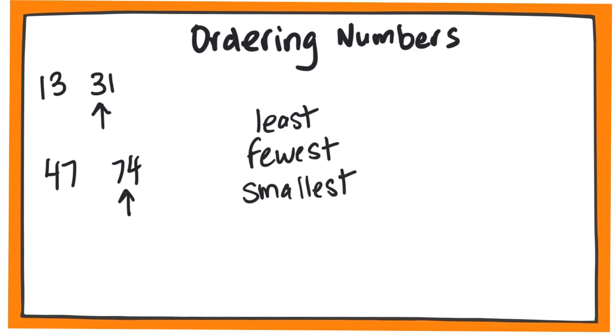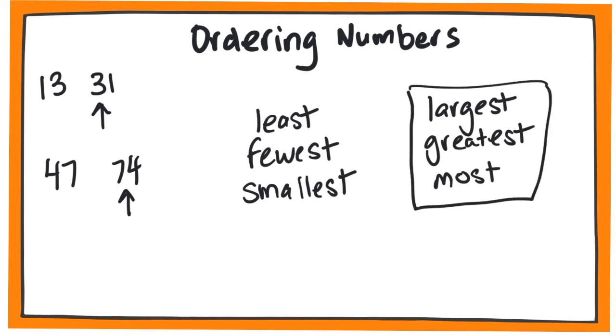When we're referring to numbers, sometimes we use words like largest, greatest, and also most. They all mean the same thing. Largest would be the opposite of least.